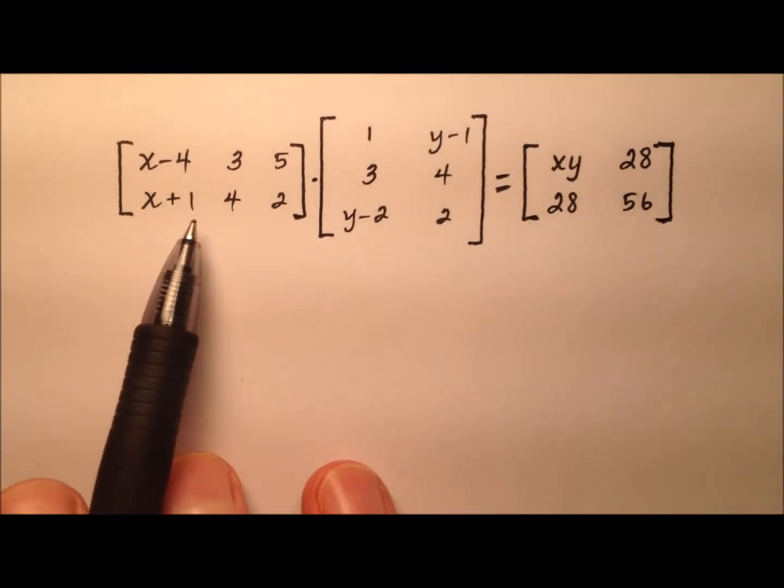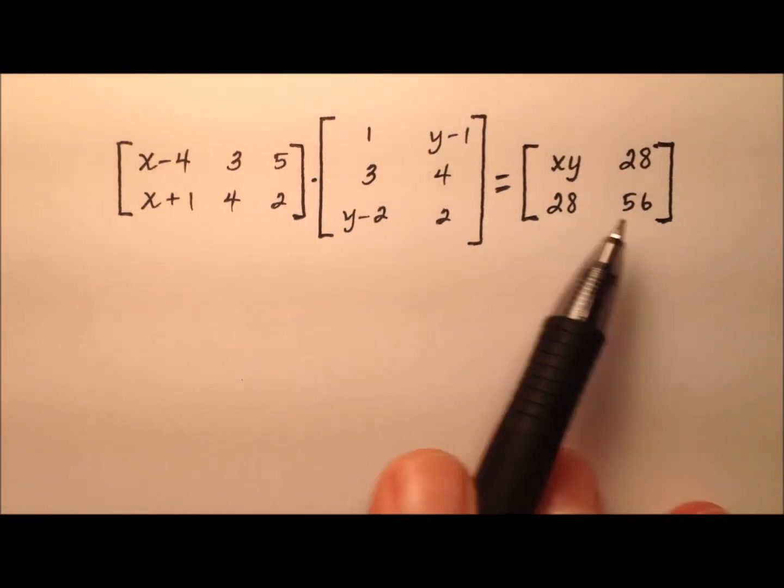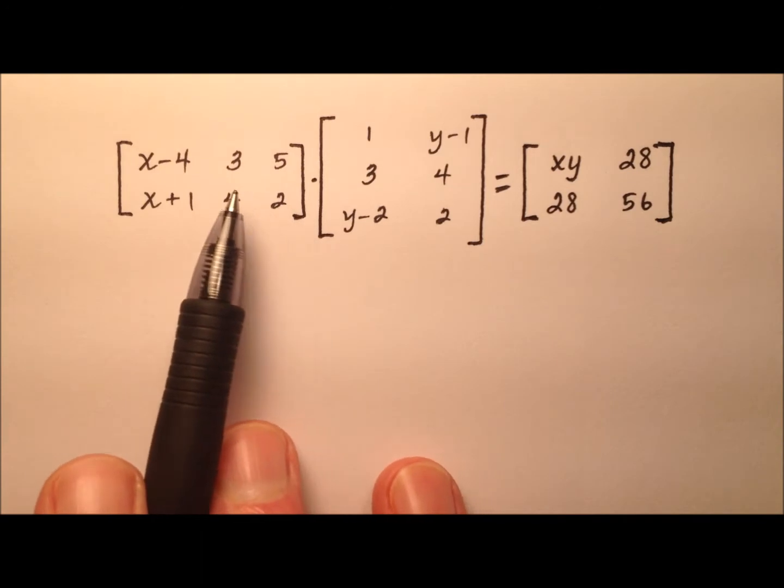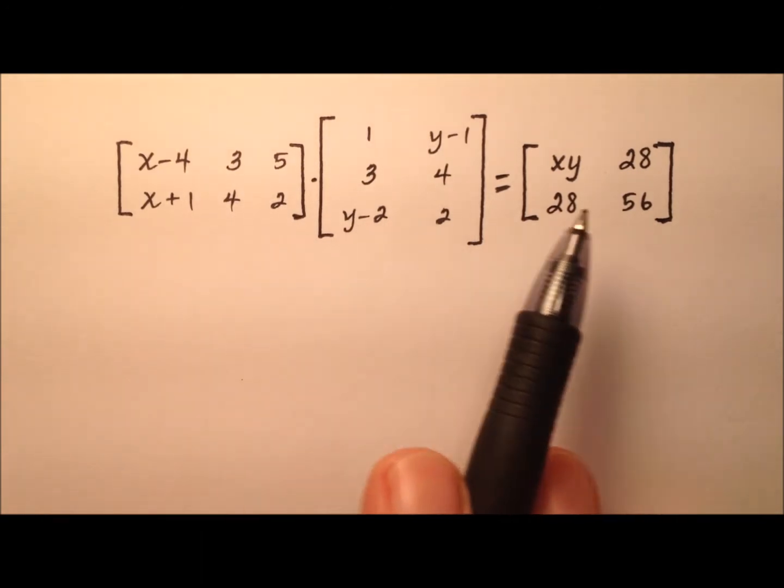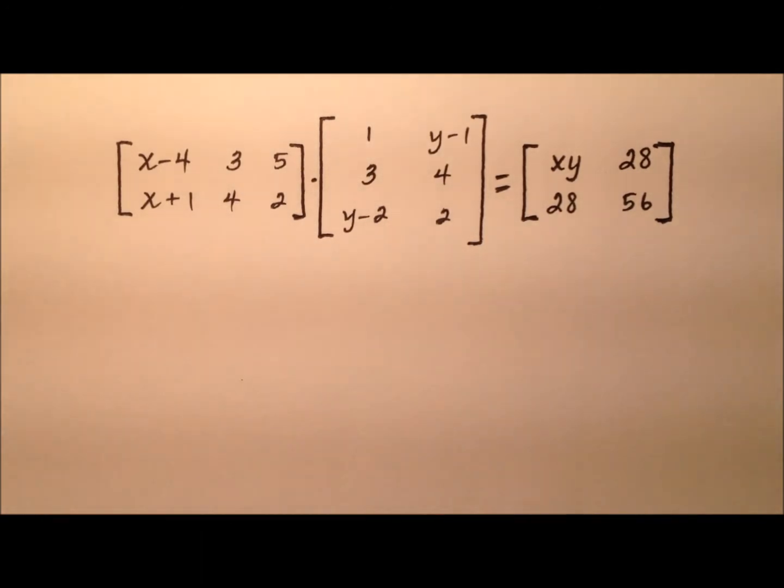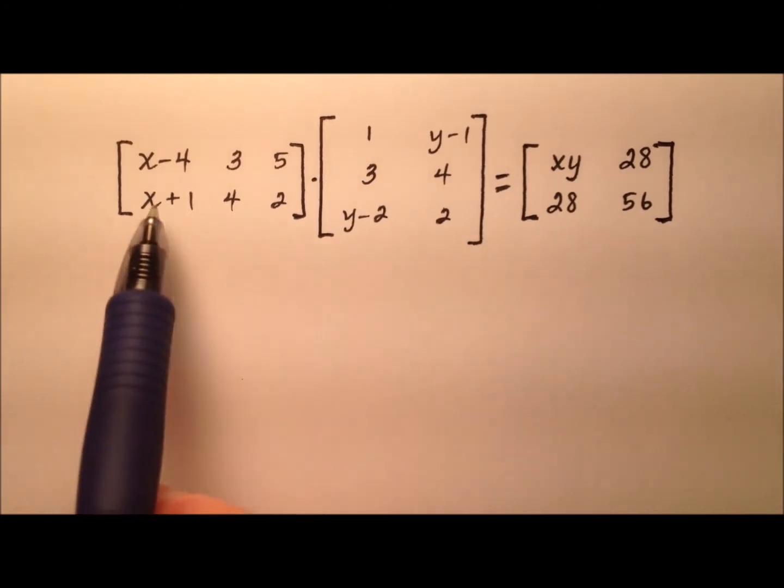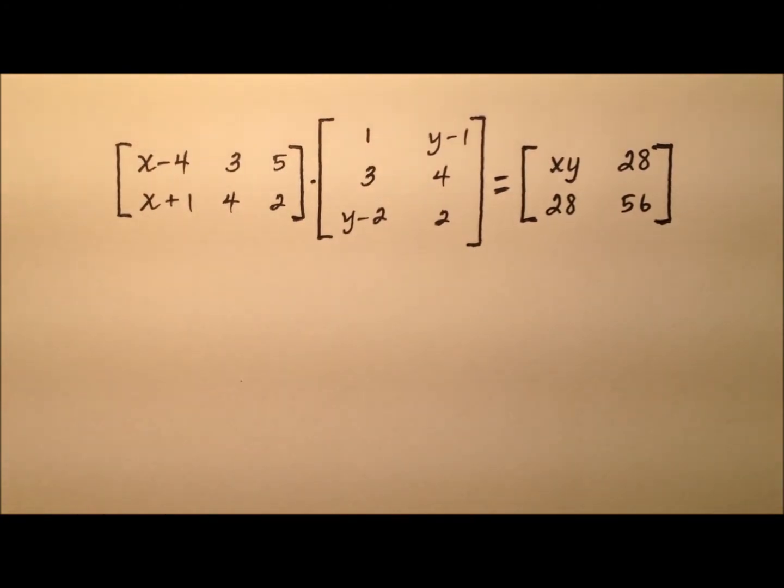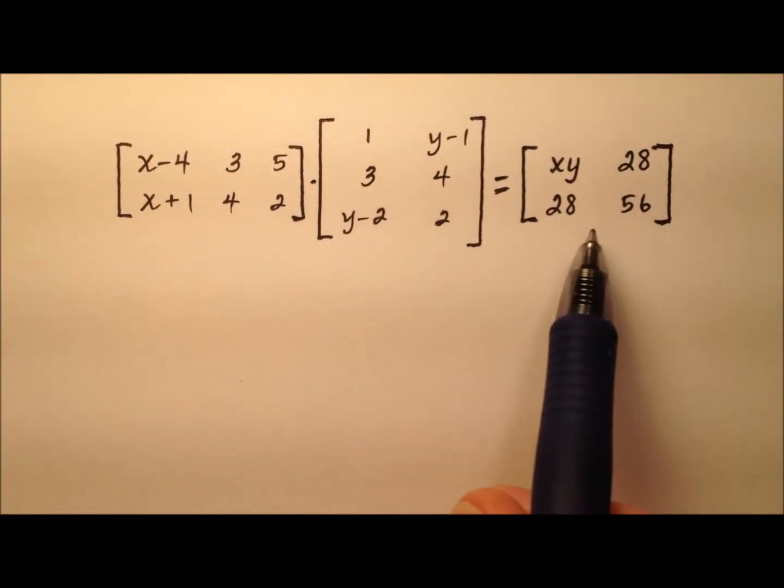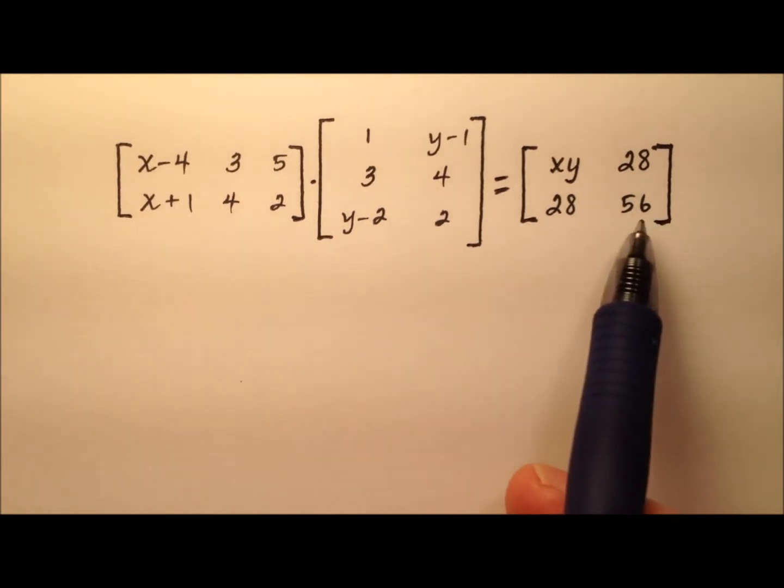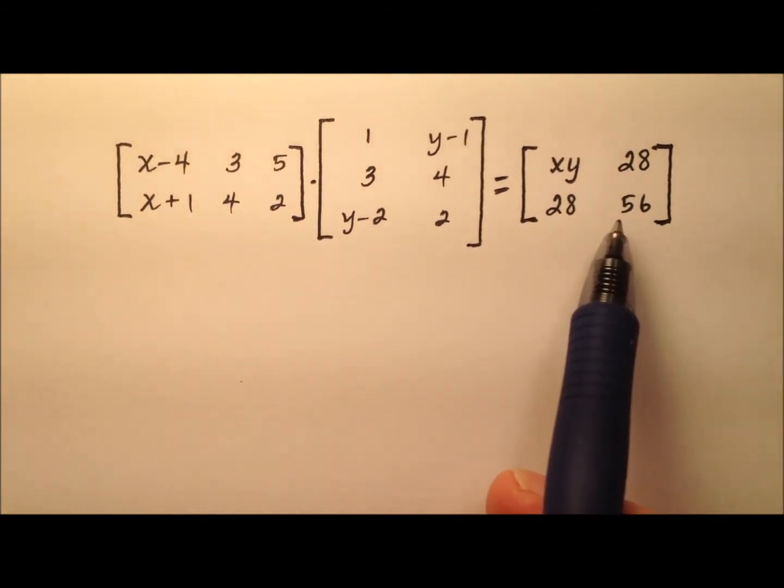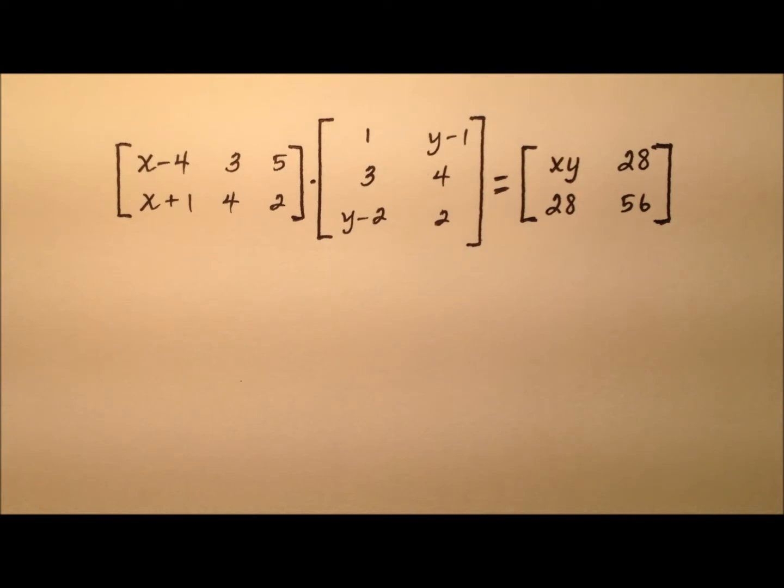In this example, it looks like we have ourselves a matrix equation, where on the left side we have some matrix multiplication, and on the right side we have our product matrix. Now, this problem in particular seems to be tricky for some students, so if you haven't already tried it or looked at it, I encourage you to pause the video and try this out for yourself first, and then we'll walk through it together.